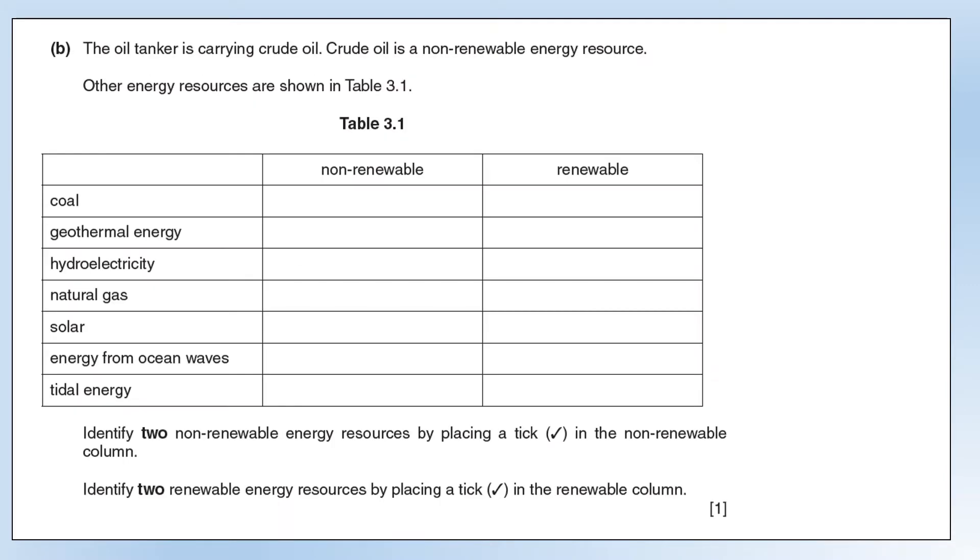The oil tanker is carrying crude oil, and crude oil is an example of a non-renewable energy source. What we've got is a list of some other types, and what we need to do is identify two non-renewable energies and two renewable. I'm going to go through the whole list so you can see what each of them is, but remember we only needed two of each.